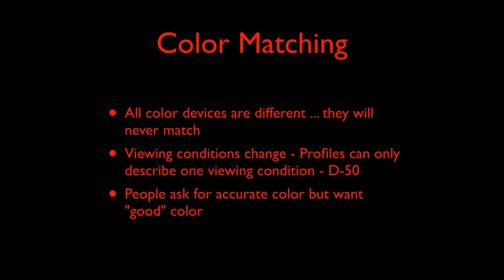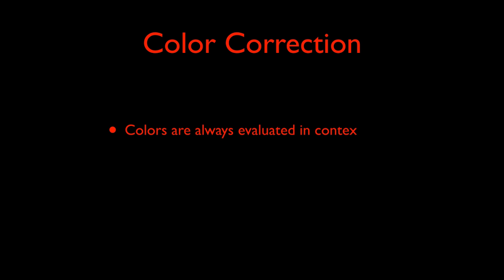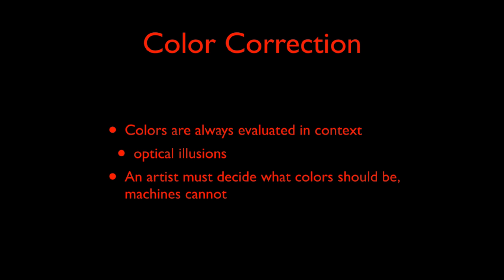The idea of 'good color' from a human perspective is not necessarily scientifically accurate. Color management is not the same thing as color correction. Color correction is a human creative activity — colors are always evaluated in context, and this feature of the human visual system is what is responsible for optical illusions. Because of this, the human artist must decide what color should look like in an image; a machine by itself cannot do this automatically.